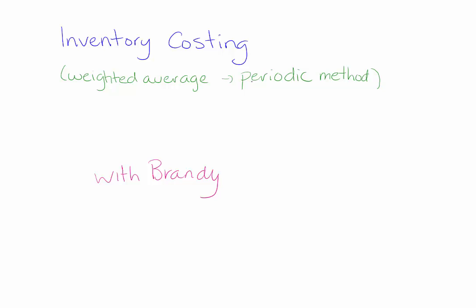Remember that under the periodic system we're not updating our inventory and cost of goods sold every single time we make a sale. We wait until the end of the month or the end of the year to update our cost of goods sold and our inventory.